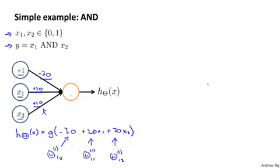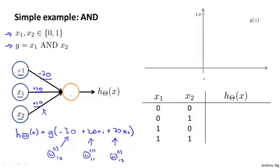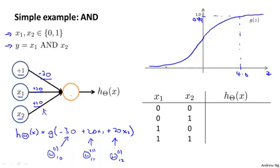Let's look at what this little single neuron network will compute. Just to remind you, the sigmoid activation function g of z looks like this. It starts from 0, rises smoothly, crosses 0.5, and then it asymptotes at 1. And to give you some landmarks, if the horizontal axis value z is equal to 4.6, then the sigmoid function is equal to 0.99, this is very close to 1. And kind of symmetrically, if it's negative 4.6, then the sigmoid function there is equal to 0.01, this is very close to 0.